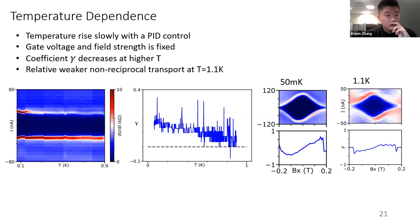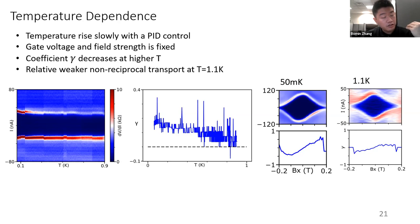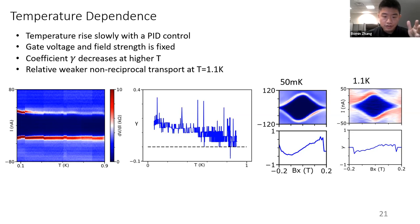We also studied the temperature dependence. We fixed the gate voltage and field where we can see non-reciprocal transport, then slightly increased the temperature with PID control. Gamma keeps decreasing as temperature rises. Comparing the diffraction pattern at 50 mK versus 1.1 K, gamma becomes much weaker at higher temperature. So the diode effect is temperature dependent in our device and gets weaker at higher temperature.